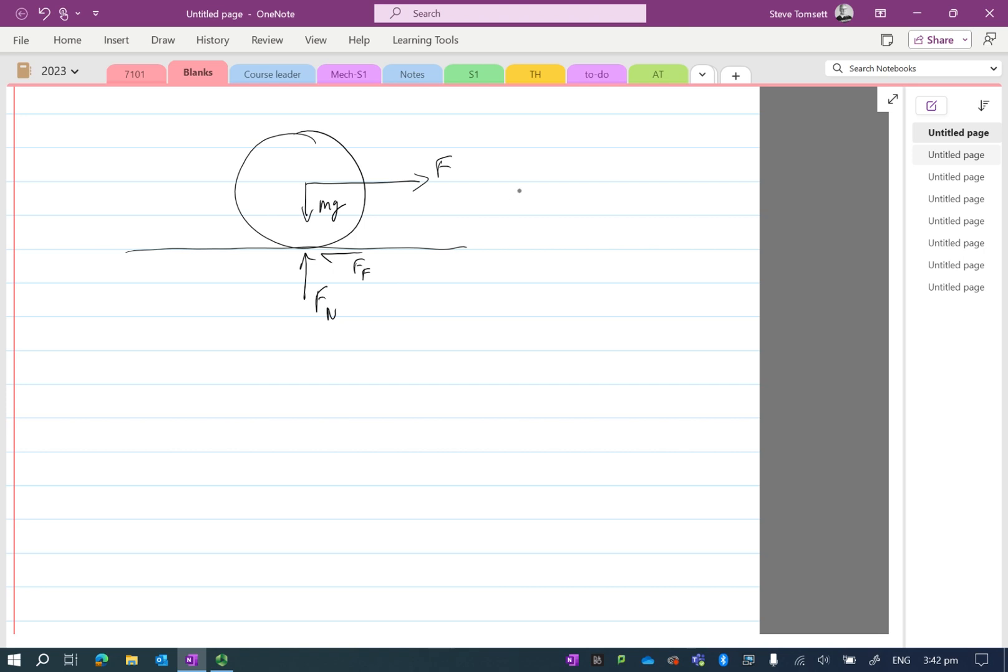If we look at our sum of forces, sum of forces left and right must equal zero, therefore we know that F must equal the value of the friction force which is being applied.